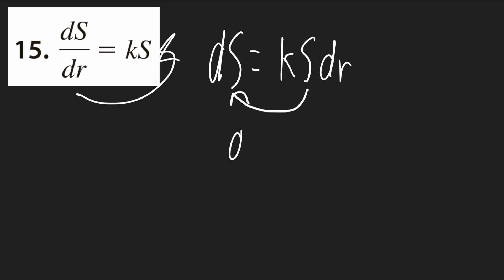Then divide the s to the other side. We'll get ds over s is equal to k dr.